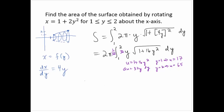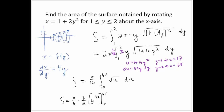After substitution, I have 2π · (1/32) = π/16 times the integral from 17 to 65 of √u du. So the surface area is π/16 · (2/3)u^(3/2) evaluated from 17 to 65, which gives π/24 times (65^(3/2) − 17^(3/2)). That concludes the presentation for this section.